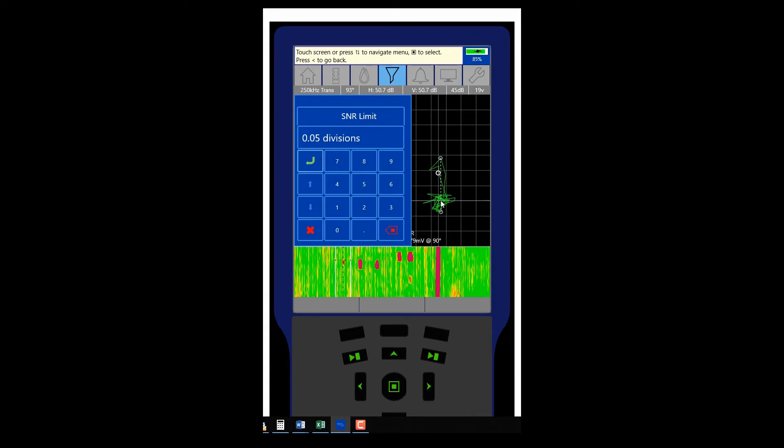So it looks like this noise is approaching one division. So if I go up, for example, as I approach one division, it's going to start getting filtered out.